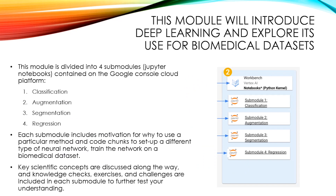This module will introduce you to deep learning and explore its use for biomedical data sets. The module is divided into four submodules, each in a Jupyter notebook, contained on the Google Cloud Console platform. The submodules are classification, augmentation, segmentation, and regression. Each submodule includes motivation for why to use that particular method and code chunks to set up a different type of neural network and train that network on a biological data set. Key scientific concepts are discussed along the way, and there are knowledge checks, exercises, and challenges in each submodule to further test your understanding.